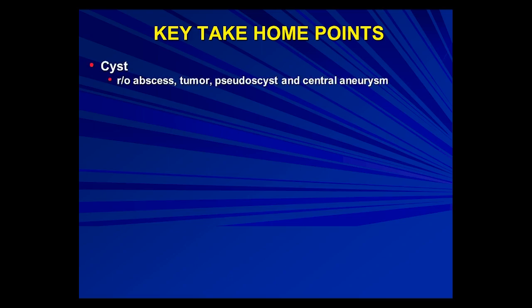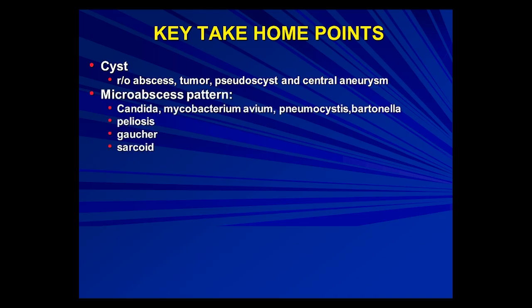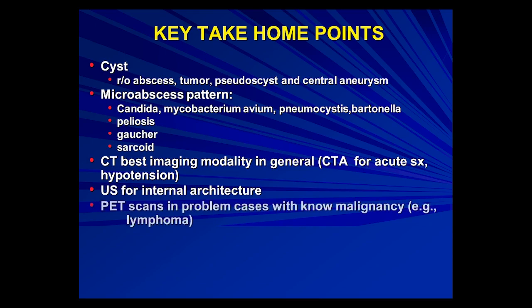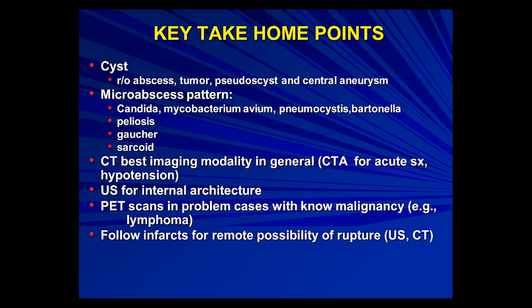If it's cystic, consider abscess, cystic tumor, pseudocyst, or central aneurysm. To summarize the micro-abscess pattern causes: Candida, Mycobacterium avium intracellulare, Pneumocystis, bacillary angiomatosis, sarcoidosis, and Gaucher's patients. In general, CT is best. Use CTA for acute symptoms or hypotension. Use ultrasound if you need to assess solid versus cystic or internal architecture. Sometimes with a known malignancy — is this an incidentaloma or a met, or involvement by tumor — a PET scan could be helpful.